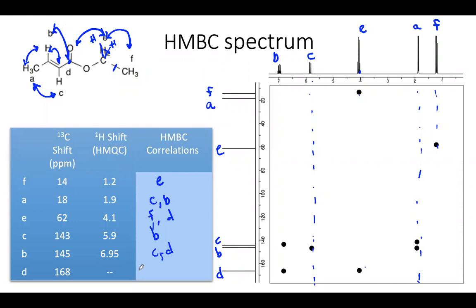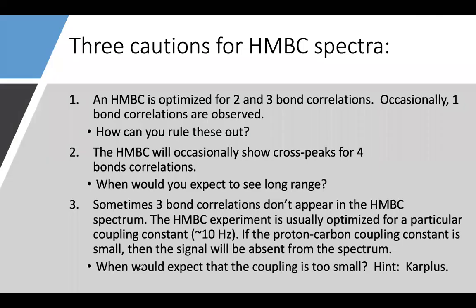Before we were just doing them by process of elimination. So just a couple of caveats about an HMBC. It's optimized for two to three bond correlations. Sometimes you see the one bond correlations. We can rule those out with HMQC because we already knew those one bond correlations. Occasionally see four bond. We talked about that. Conjugated systems, alkynes, W coupling, things where you would see long-range coupling in a proton NMR.